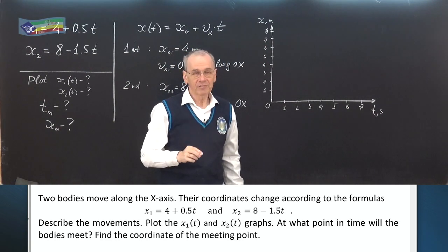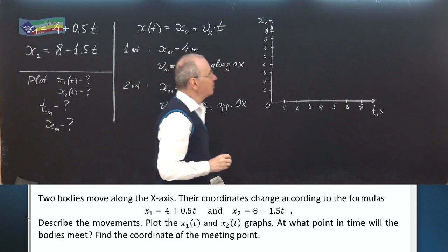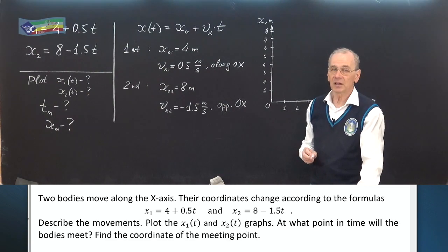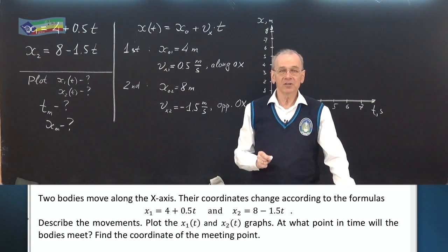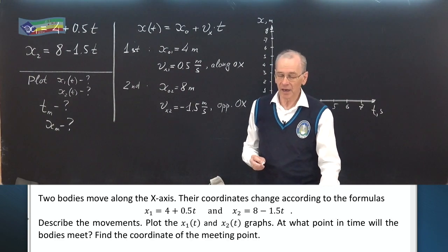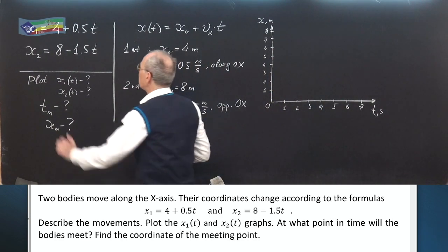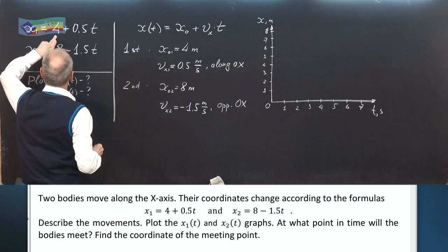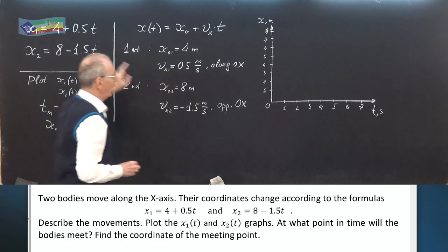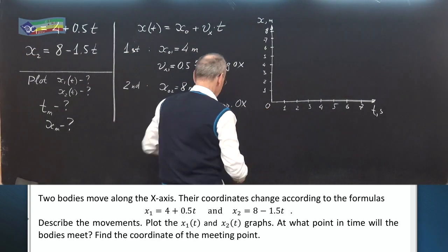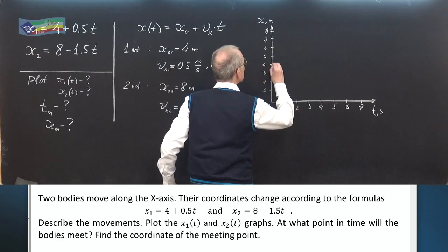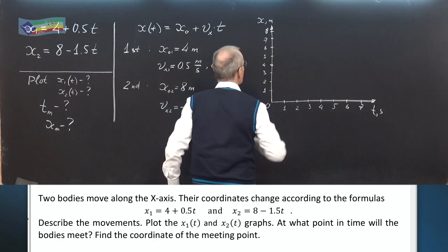The graph which describes uniform motion coordinate versus time is a straight line. To plot a straight line, we need two points of this line. For example, for the first body, one point corresponds to the initial position when time equals 0, coordinate equals 4.